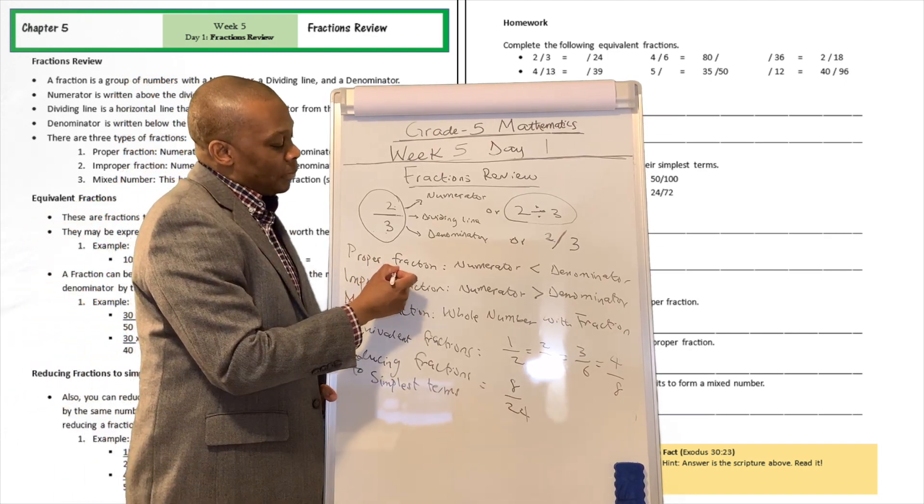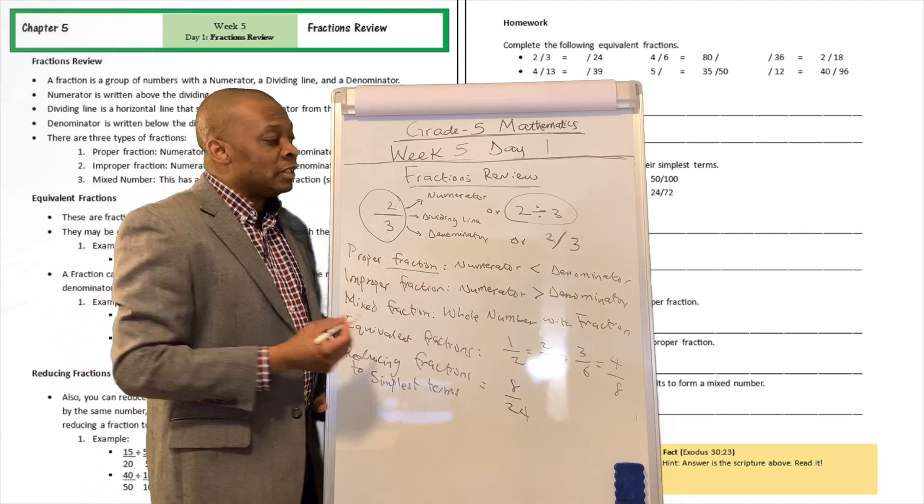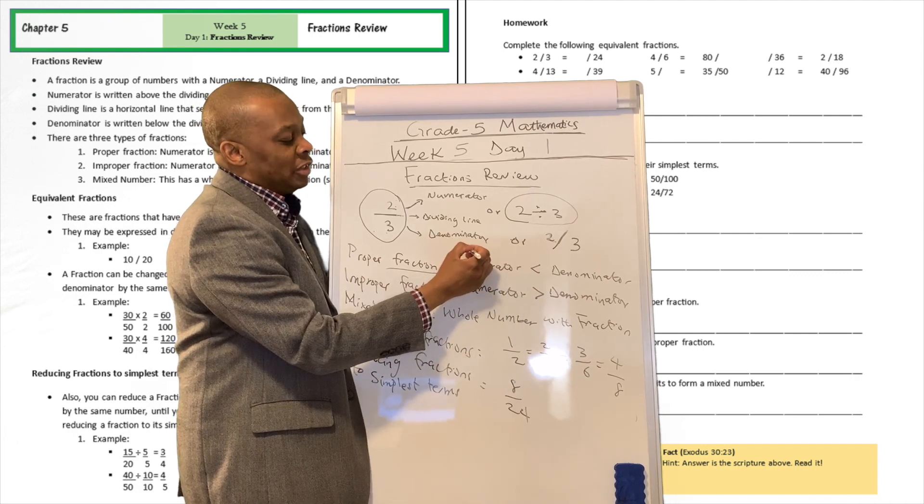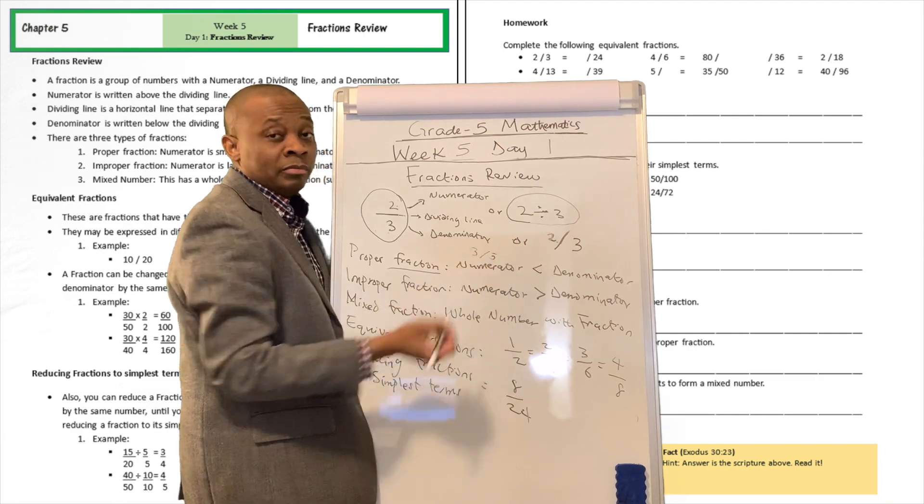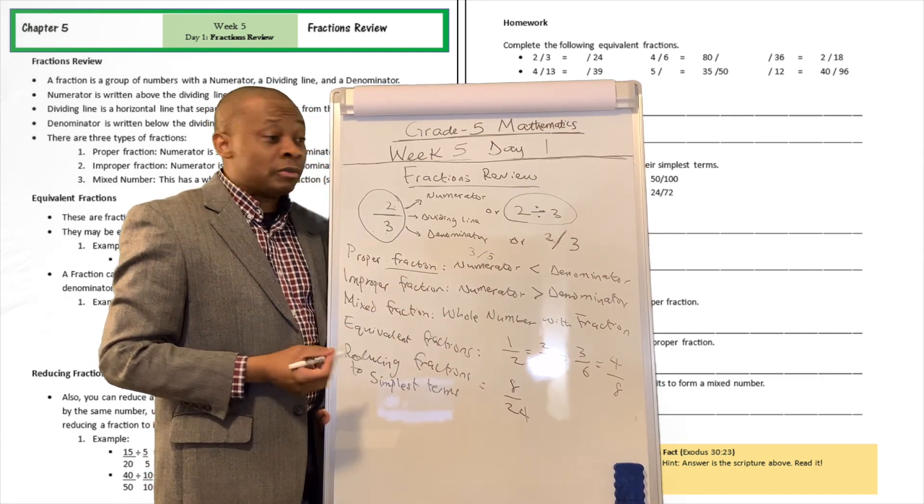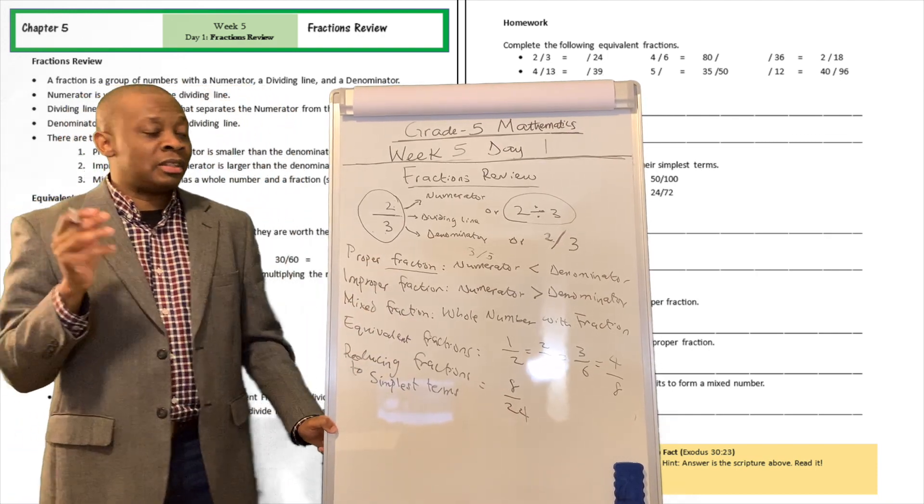What is a proper fraction? Well, a proper fraction is going to be a fraction where the numerator is less than the denominator. An example of that is going to be two divided by three that we talked about, but of course another example is going to be three divided by five. The three here is going to be less than the five. So this is a proper fraction because the numerator is less than the denominator.